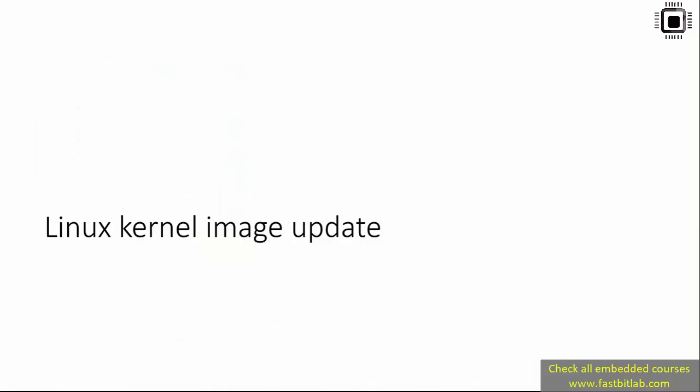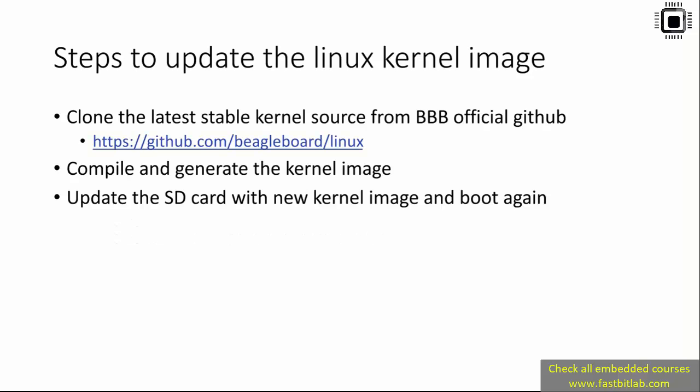The next step is Linux kernel image update. This step is required because the pre-built image provided has kernel version 4.4.62. When you build your kernel module or device driver, you have to build against the kernel source you are using on the target. That is why you should have the kernel source present on your host computer. In future videos I will show you how to download, configure, and generate a kernel image, then update the SD card.